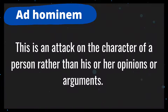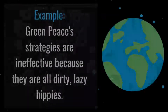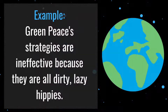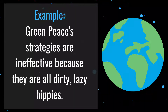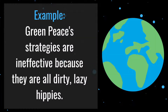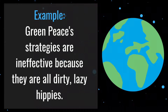Number 8 is ad hominem. This is an attack on the character of a person rather than his or her opinions or arguments. For example: Greenpeace's strategies aren't effective because they are all dirty lazy hippies. In this example, the author doesn't even name the particular strategies Greenpeace has suggested, much less evaluate those strategies on their merits. Instead, the author attacks the characters of the individuals in the group.